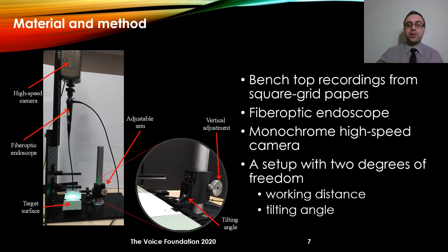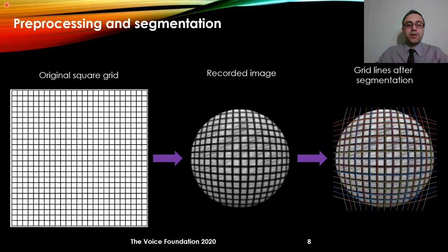To answer these research questions we are using a set of benchtop recordings. A high-speed camera is connected to a flexible fiber optic endoscope. An adjustable arm moves in the up and down direction, changing the distance between the target surface and the tip of the endoscope — we call that working distance in this study. The setup also allows the target surface to be tilted, so the angle between the endoscope and the target surface can be changed — we call that the tilting angle. We use a set of calibrated square grids as the target surface. We then applied an automatic method for segmentation of all the lines, and this figure is showing the result of that segmentation.